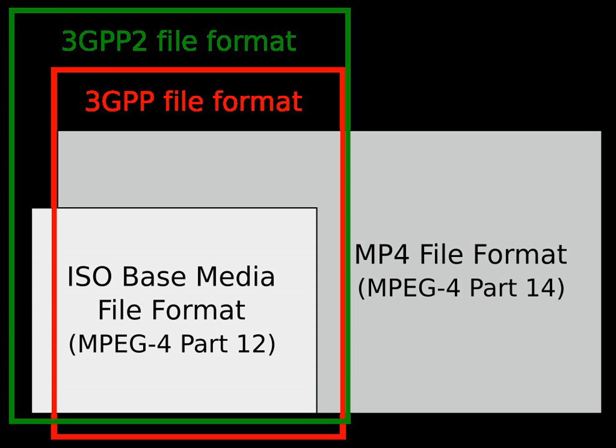ISO Base Media File Format, ISO/IEC 14496-12 MPEG-4 Part 12, defines a general structure for time-based multimedia files such as video and audio. The identical text is published as ISO/IEC 15444-12 JPEG 2000 Part 12. It is designed as a flexible, extensible format that facilitates interchange, management, editing and presentation of the media. The presentation may be local or via a network or other stream delivery mechanism. The file format is designed to be independent of any particular network protocol while enabling support for them in general. It is used as the basis for other media file formats, e.g. container formats MP4 and 3GP.